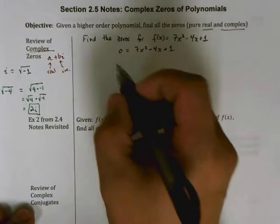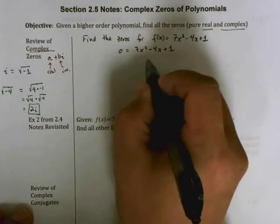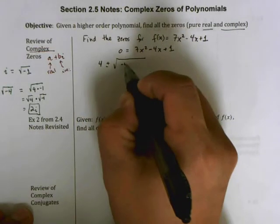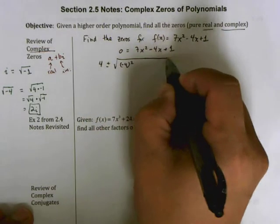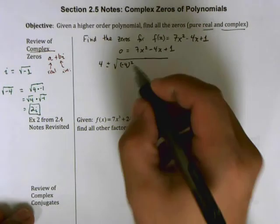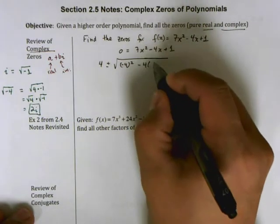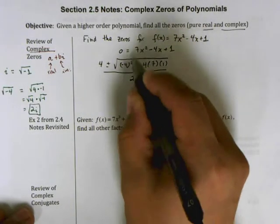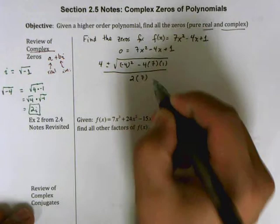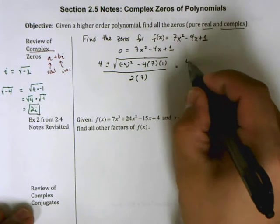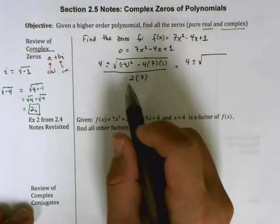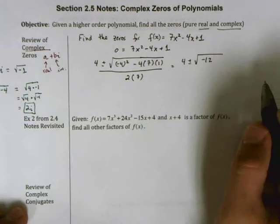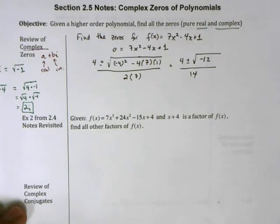Opposite of B is 4, plus or minus square root of B squared—remember to write parentheses around these numbers when you're squaring them because that makes a difference—minus 4 times a which is 7 times c which is 1, all divided by 2a which happens to be 7. This comes out to 4 plus or minus the square root of 16 minus 28, so that's negative 12, divided by 14.